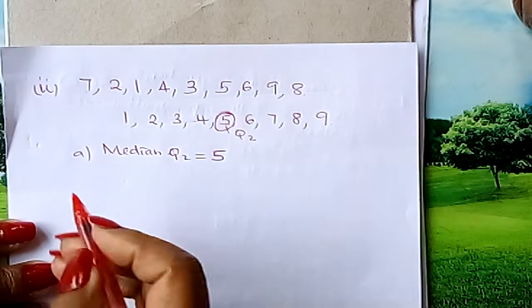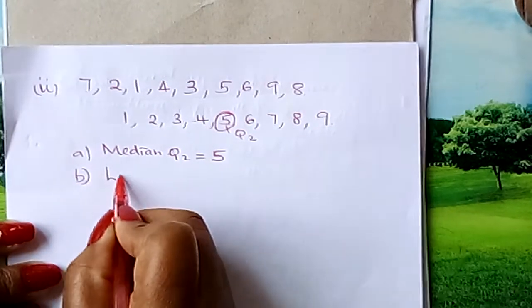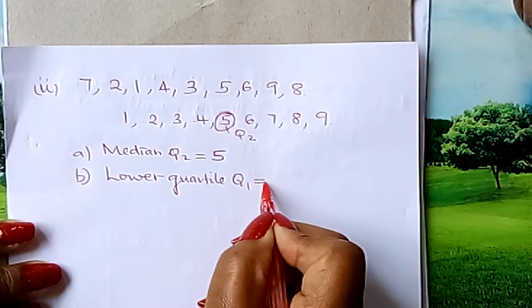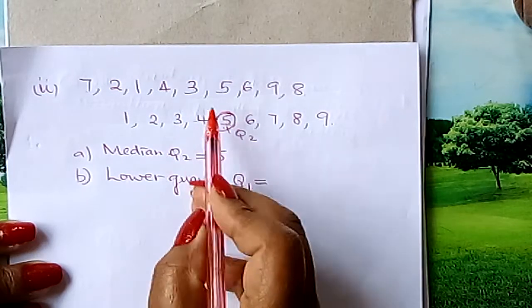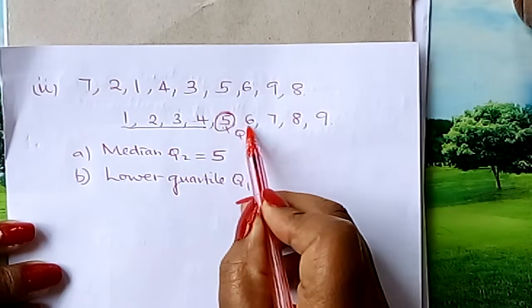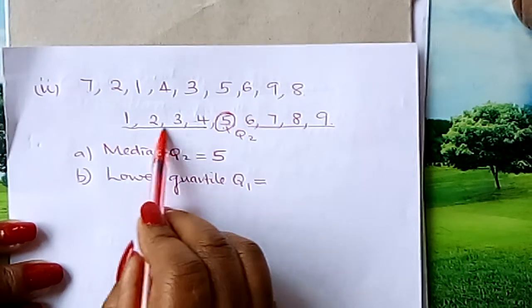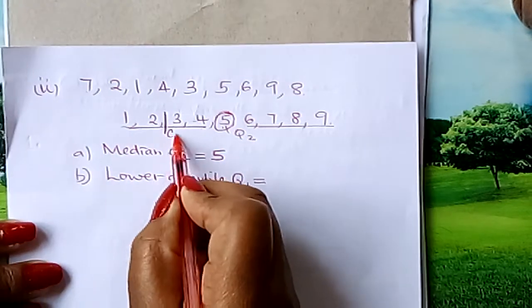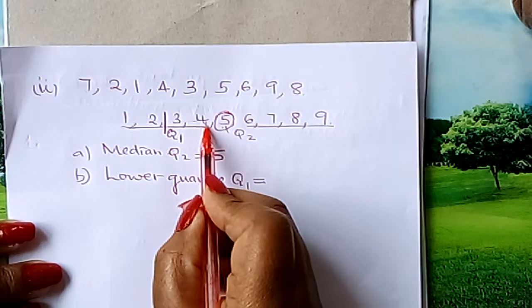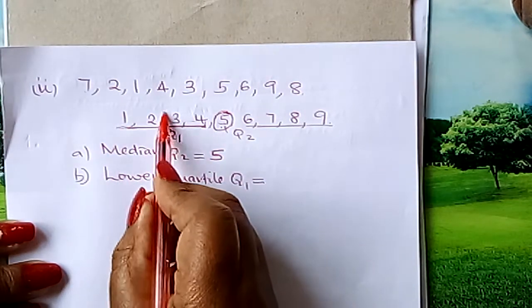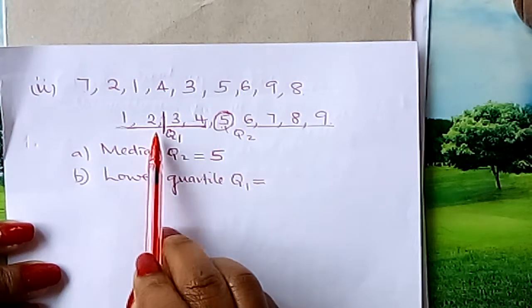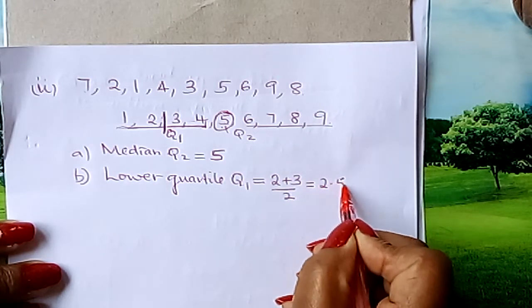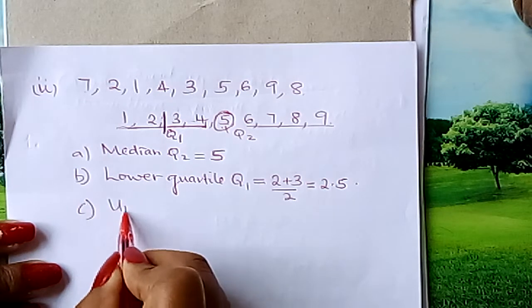We go to B: what is our lower quartile Q1? The median divides the data into the lower part and the upper part. In the lower part, you identify its median — it falls between 2 and 3. So we add 2 plus 3 divided by 2, which gives us 2.5. That is our Q1.